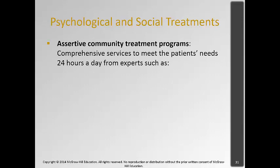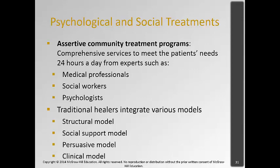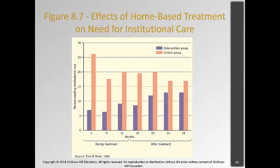Assertive community treatment programs are a newer intervention that has taken off in the last decade or two. Unlike traditional treatment where the patient goes to the therapist, in this model the therapist goes to the patient. It's a team of individuals — including medical professionals, social workers, and psychologists — available 24 hours a day, integrating various models to work with the individual and provide housing and other social supports. By doing this, they provide much more stability and people have much better outcomes, with less need for re-institutionalization. There are positive effects of these treatments for both the individual and the family.